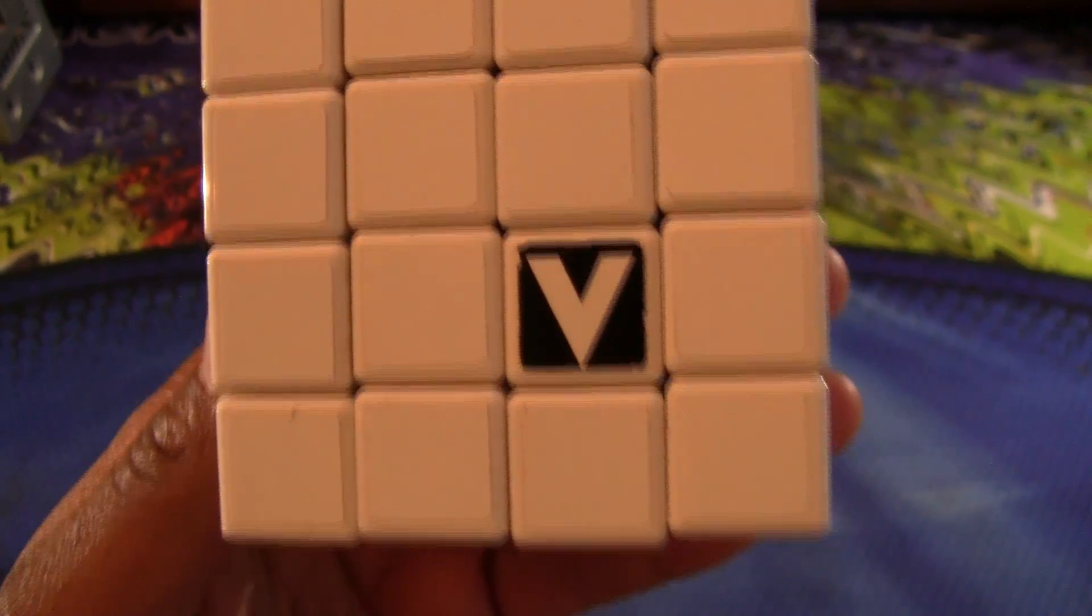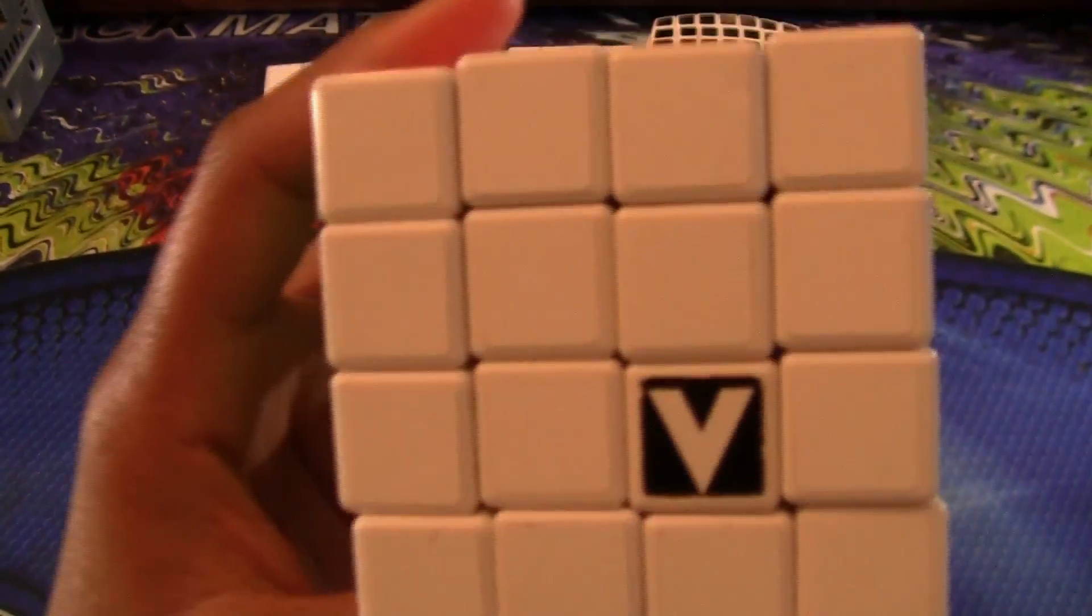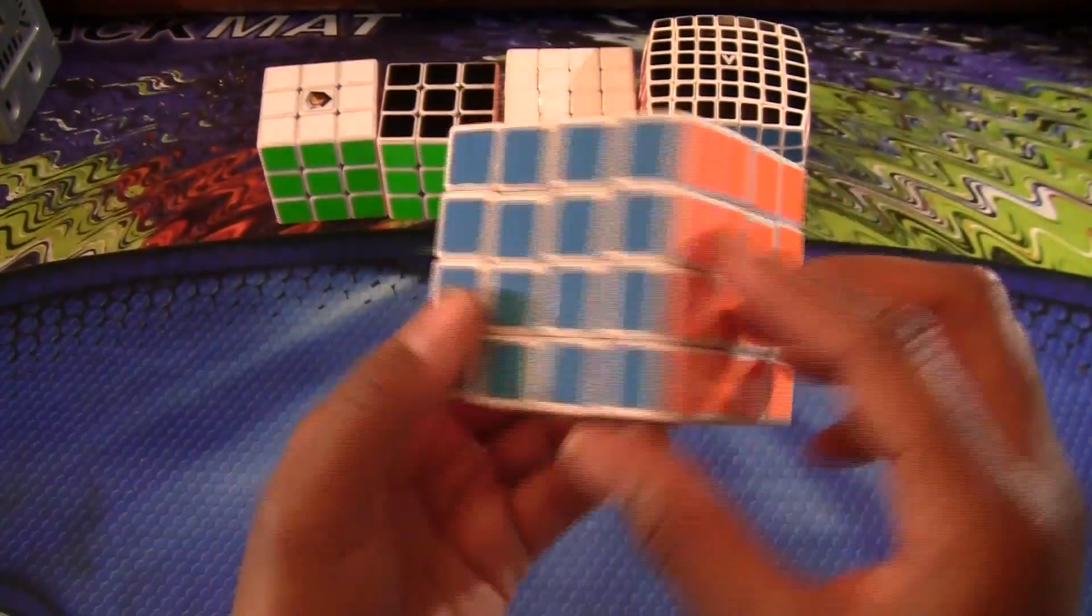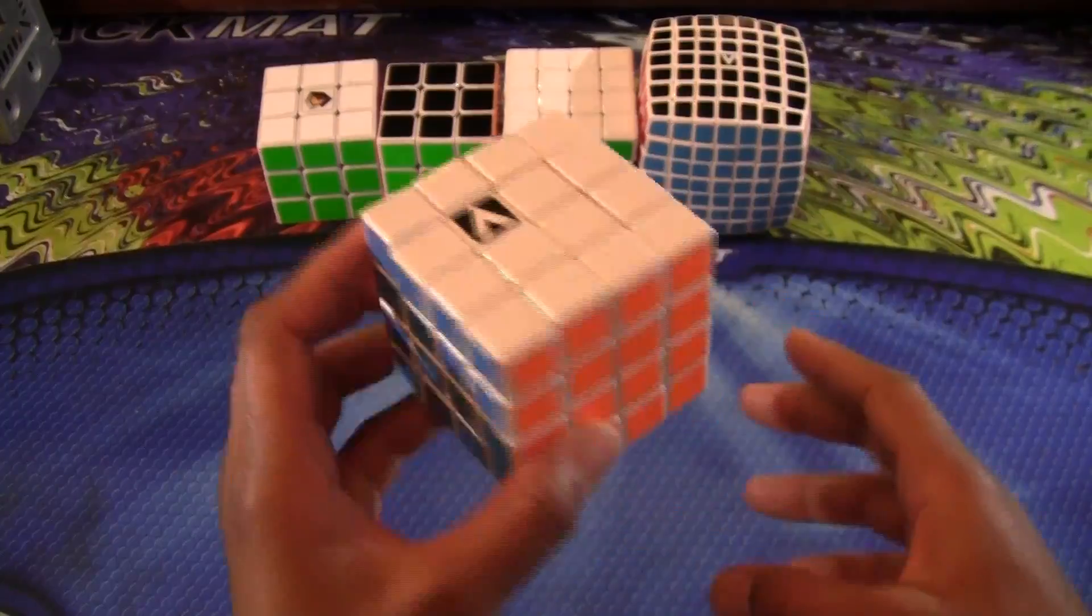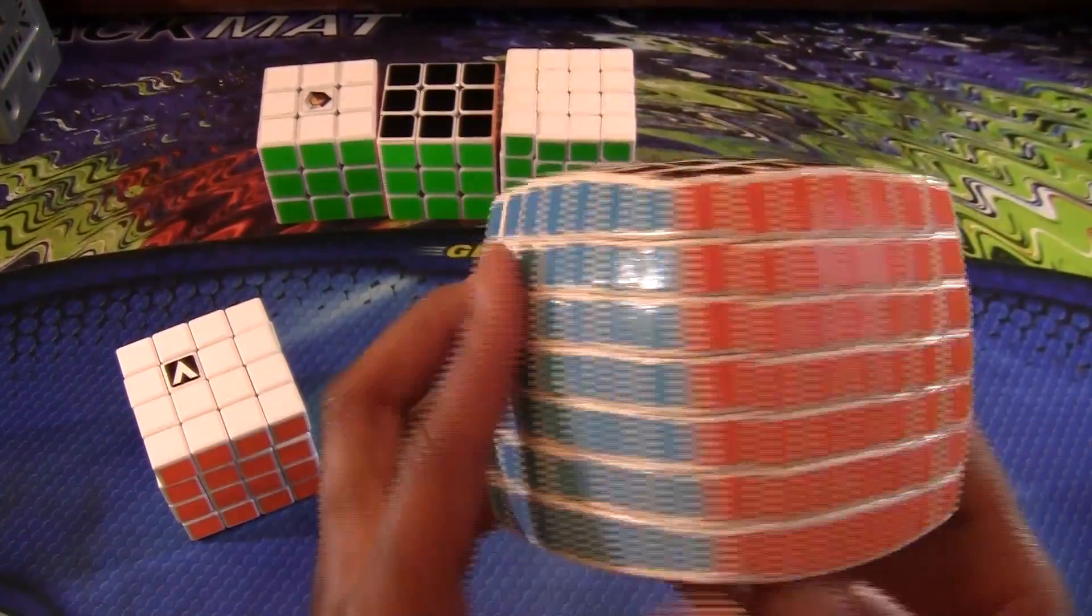This is the logo the cube came with. After this review, I'm probably going to take it off. I just kept it on so you guys could see the logo. These are not the stickers the cube came with. I changed them for brighter stickers. But this is what the cube came with. These type of stickers.